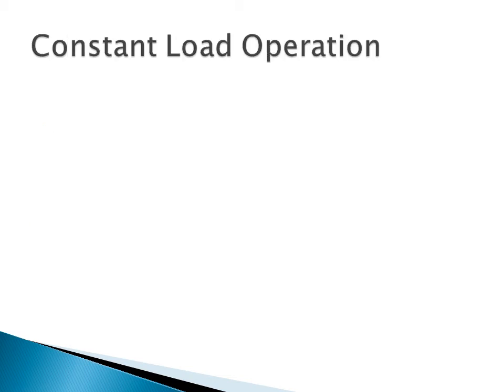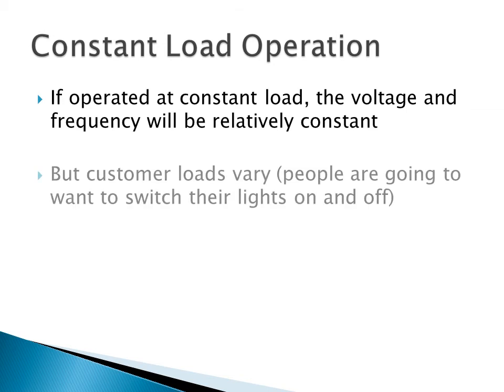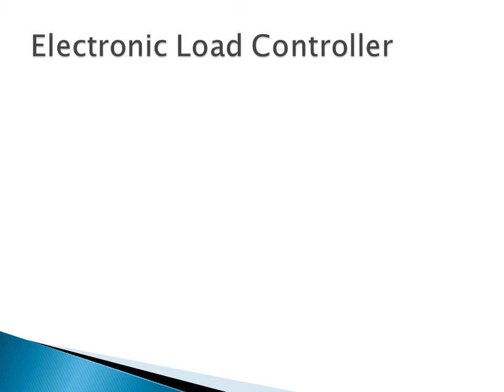So, what is constant load operation? Well, basically, it means you're running the motor at a fixed power output. And if we operate it like this, due to the characteristics of the induction motor, the voltage and frequency will stay relatively constant, which is desirable for a generator. However, the customer loads will vary, and people are going to want to change their loads. People are going to want to have the fridge come off and on, fans on and off, TV, etc. So, how do we maintain a constant load at the generator to ensure that the voltage and frequency remain generally fixed?